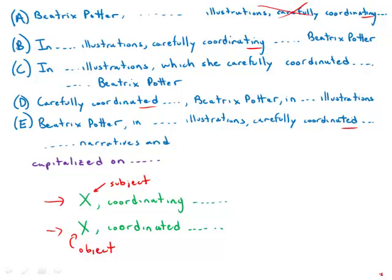Notice that b would be just about perfect if we replace coordinating with coordinated. That would make it just about a perfect sentence. But as it is, that participle doesn't quite work.